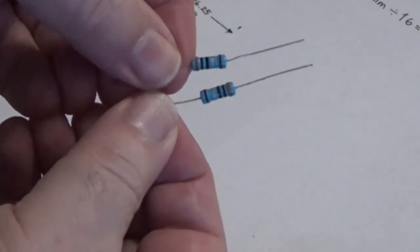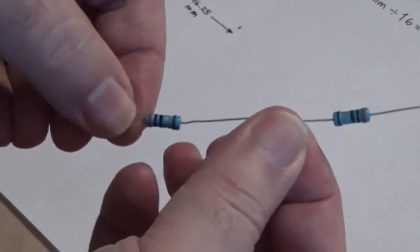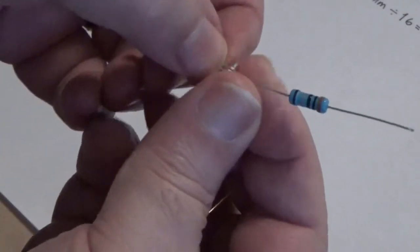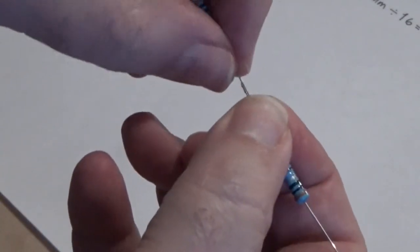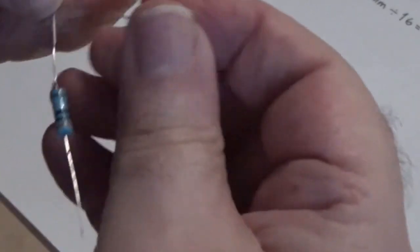If your resistors have marks on both ends, like these do, it doesn't matter which way they're oriented. But if they have marks on only one end, make sure both resistors are oriented the same direction.